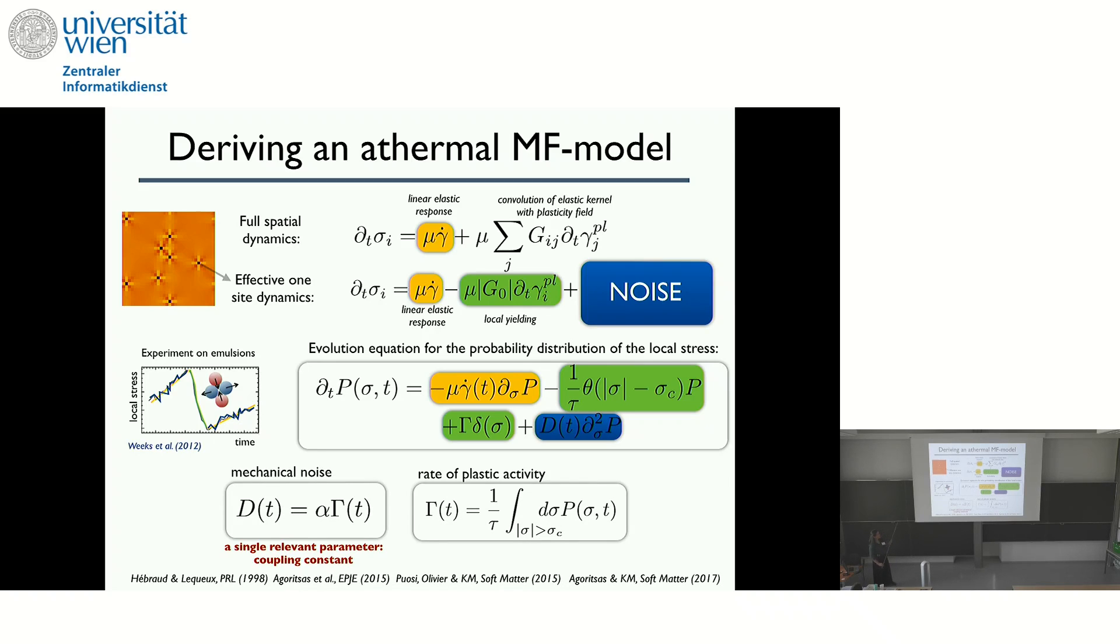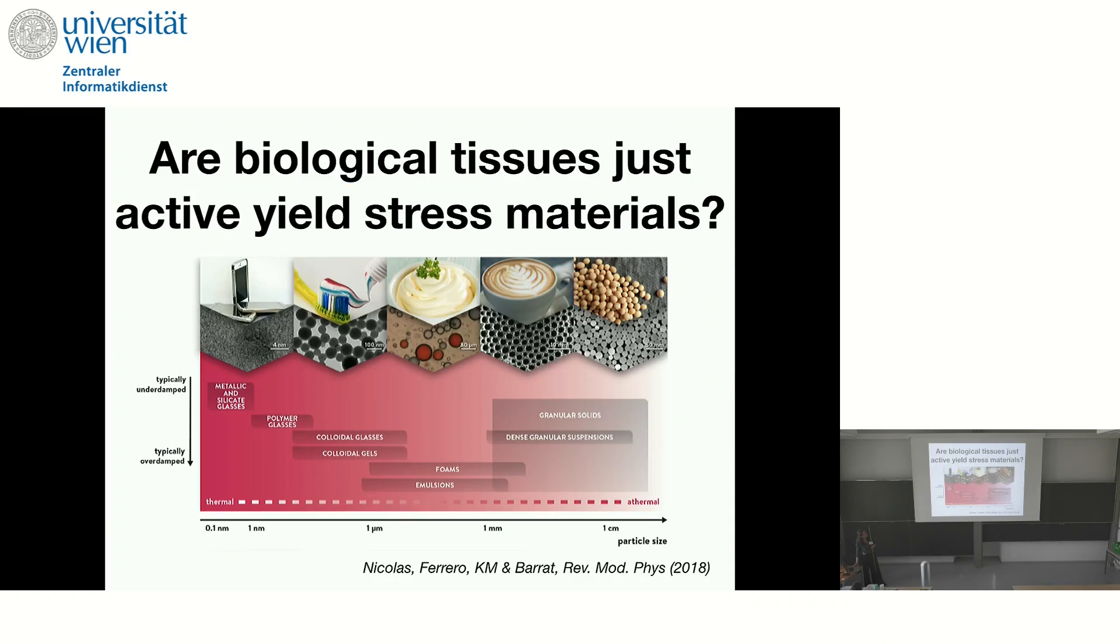So the mechanical noise is then given by this expression, where you say, well, I have mechanical noise only if there are other parts of the system yielding. Since I'm athermal, if there's no plastic events, there's no noise. And so we take the diffusion coefficient proportional to the plastic activity rate. And so this is a very simple model, and there's only a single relevant parameter, which is this coupling constant. As a function of this coupling constant, you can be in different regimes. And if this coupling is small enough, below one half, you get a yield stress fluid. So you get a Herschel-Bulkley behavior for the flow curve, for example. Okay.